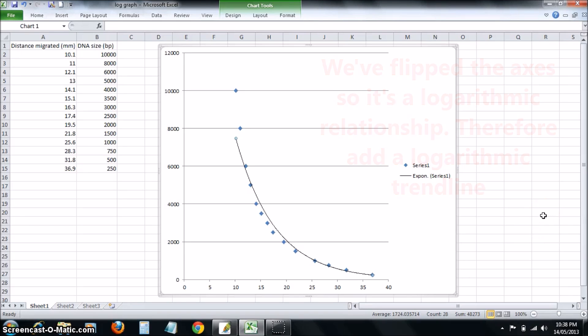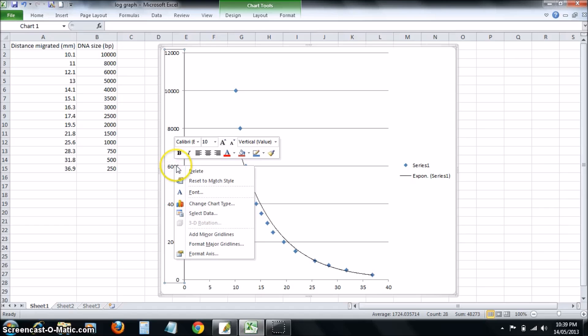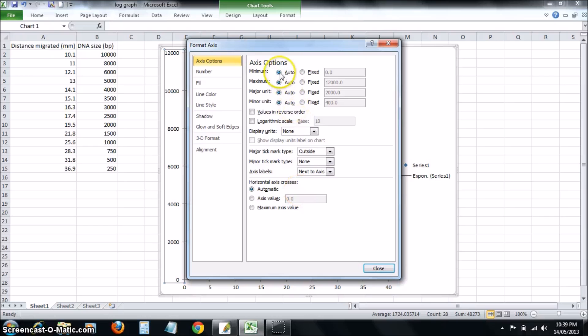Now there are a few things you should do to make this analysis a little bit easier. The first thing you should do is change your DNA size axis, your Y-axis, to a logarithmic scale. To do that, click on one of the numbers, right click, format axis, and then go to logarithmic scale.